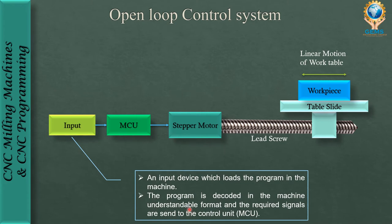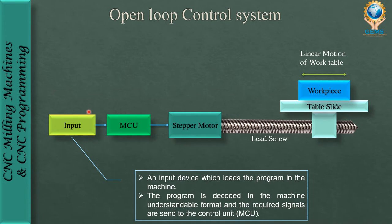The input device loads the program into the machine. The program is decoded into a machine-understandable format, and the required signals are sent to the control unit — the Mission Control Unit or Micro Control Unit. The program, which is originally in human-understandable language such as English or numbers, is decoded by the controller into machine-understandable format and sent to the MCU.